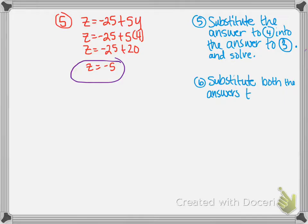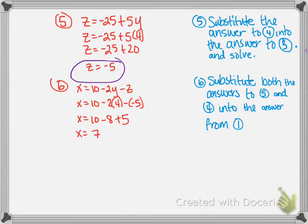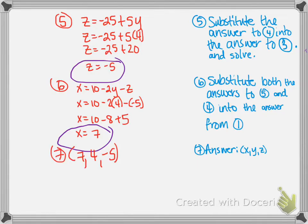Step 6: we substitute y equals 4 and z equals negative 5 into the expression from step 1, which was x equals 10 minus 2y minus z. So x equals 10 minus 2 times 4 minus negative 5, which simplifies to 10 minus 8 plus 5, giving x equals 7. We write our final answer as a coordinate (x, y, z): the solution is (7, 4, negative 5).